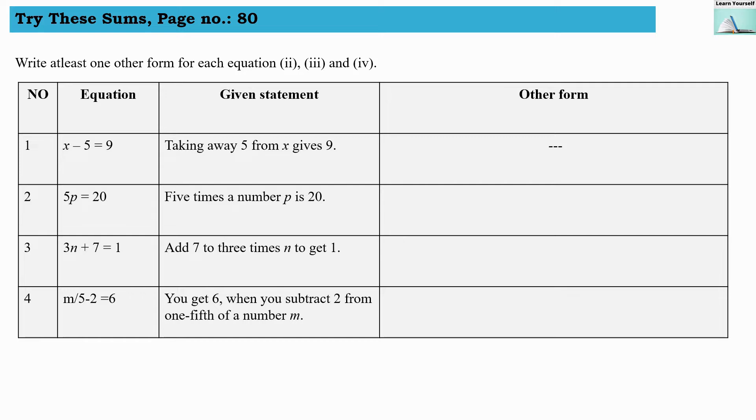What we have to do is, whatever given statement is there, that x minus 5 equals to 9, that is our equation. And given statement is taking away 5 from x gives 9.